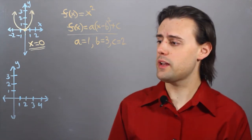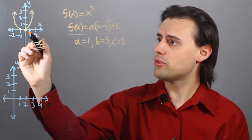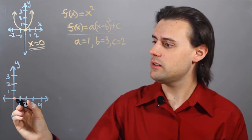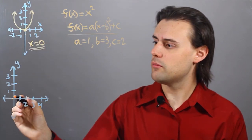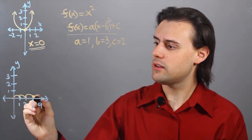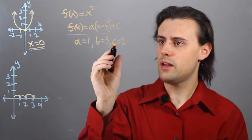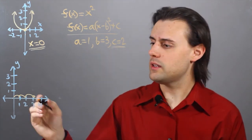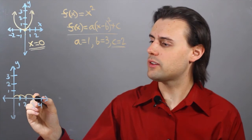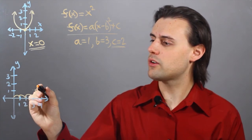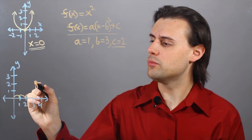If b is equal to 3, then my vertex, which was originally at the origin, is going to be moved over to the right three places. And my c means that I'm going to shift my vertex up in the vertical direction by two points.